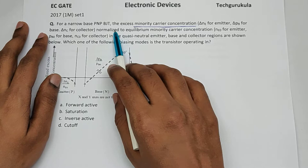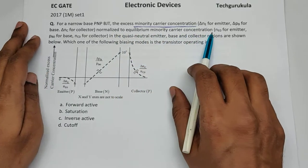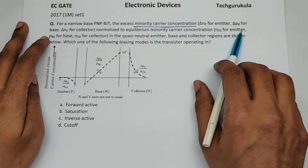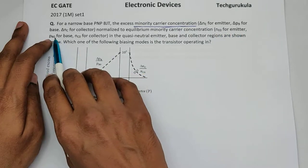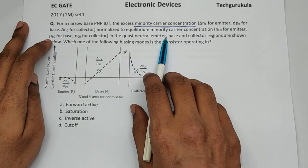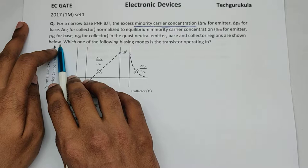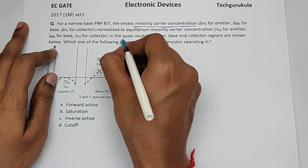for collector, normalized to equilibrium minority carrier concentration. They've given NE0 for emitter, PB0, and NC0 for collector in the quasi-neutral emitter, base, and collector regions shown below. In the theory videos we discussed